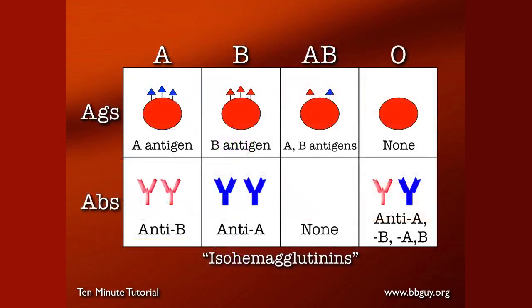In terms of how this fits together, let's just take you back to high school science. People who are blood group A have on the surface of their red cells the A antigen, and as a result, they carry in their plasma anti-B. That is called Landsteiner's Law — basically, you have the opposite antibody as you do antigens, and it follows through the ABO blood group system.